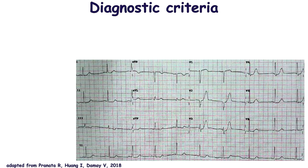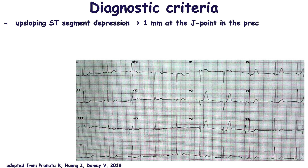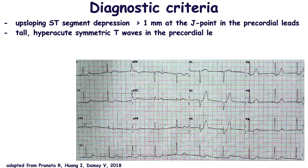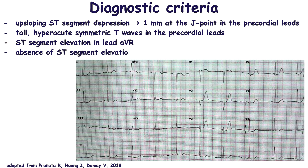Diagnostic criteria include up-sloping ST-segment depression more than 1 mm at the J-point in the precordial leads, tall hyperacute symmetric T-waves in the precordial leads, ST-segment elevation in aVR often saddle-shaped, and absence of ST-segment elevation in the precordial leads. However, a classic anterior STEMI pattern may precede or follow the DeWinter pattern.